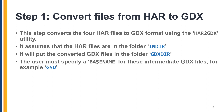The first normal step is to convert the HAR files to GDX. There is a utility called HAR2GDX which is a standard executable file that does this conversion automatically. This must be in your path so that it can be found. It assumes the HAR files are in the INDIR folder, and the output from the HAR2GDX utility will be placed in the GDXDIR folder. You must specify a base name for these intermediate GDX files, for example GSD.